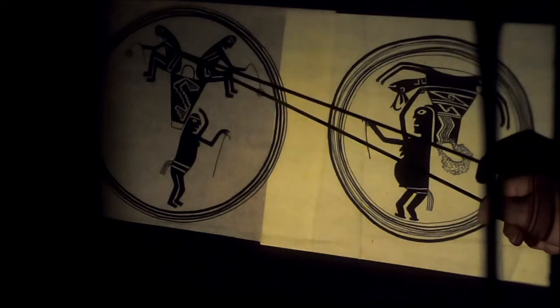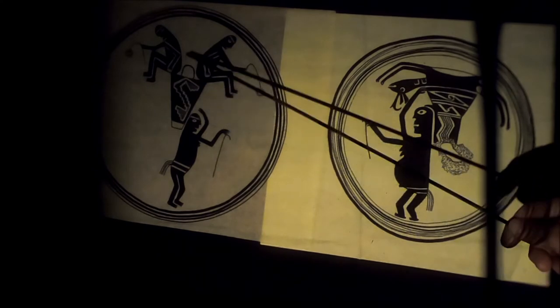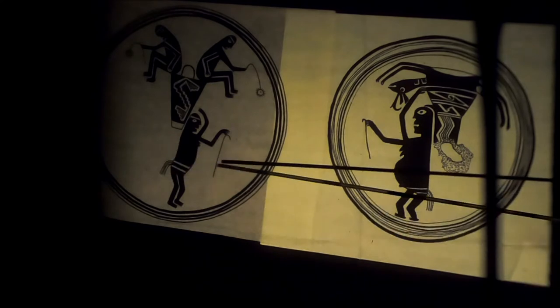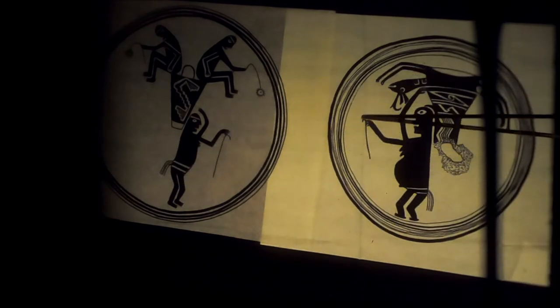Here are the Warrior Twins riding on Spider Grandmother's basket. Brother Elder, Brother Younger, and Spider Grandmother. Remember the staff of authority, the mantle of authority? She always has that little thing. Here's her sash. And this time she has an antelope in her basket.